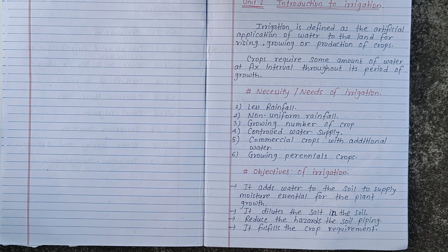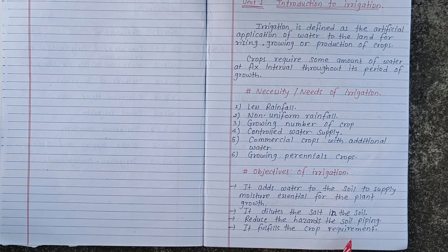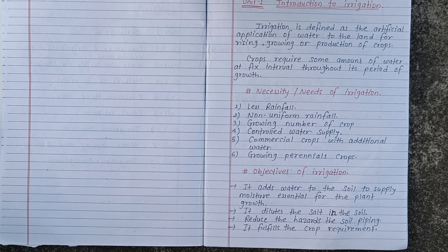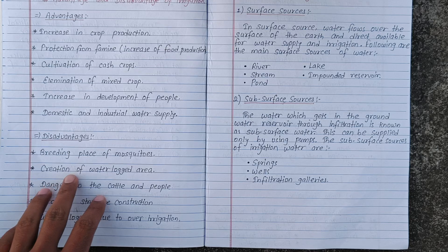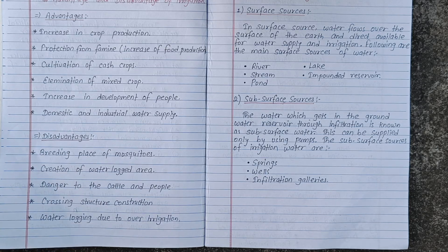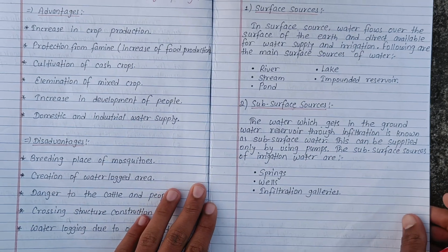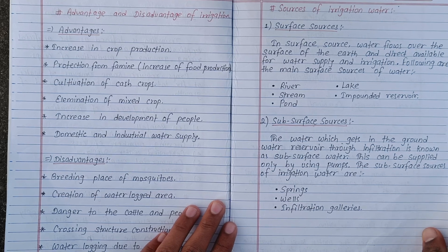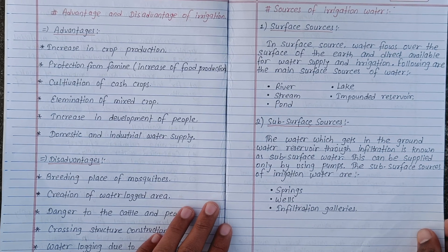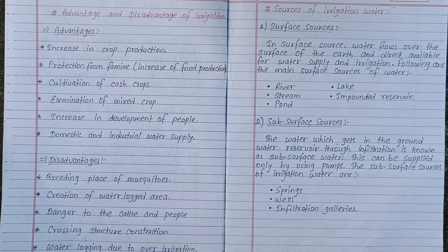Irrigation fulfills the crop water requirements — the crop will be grown successfully. Now let us look at the advantages and disadvantages of irrigation.